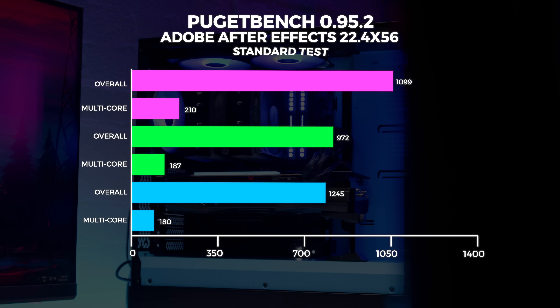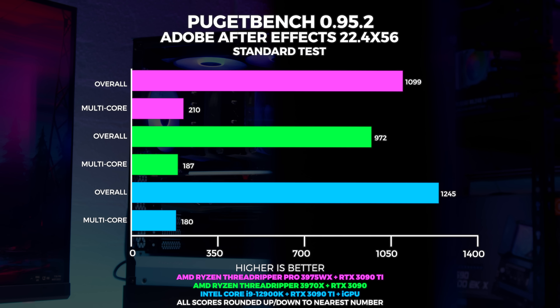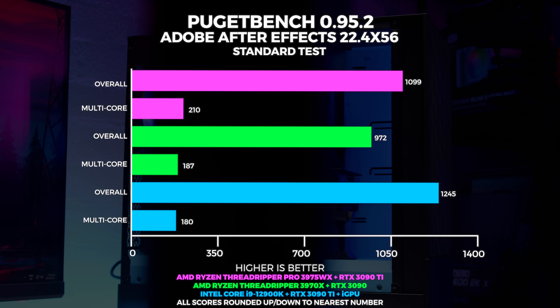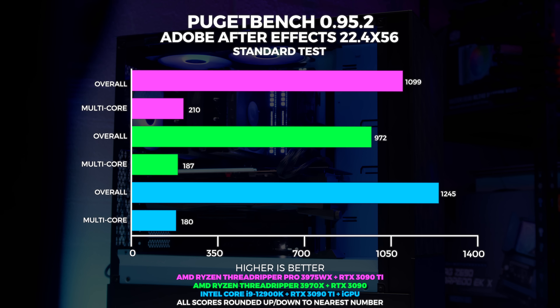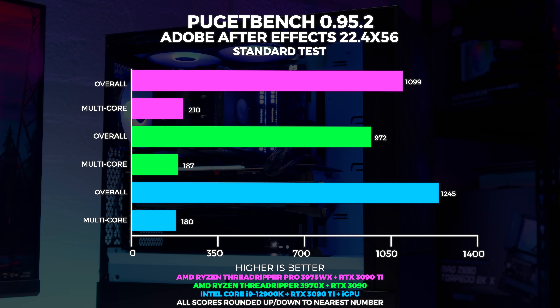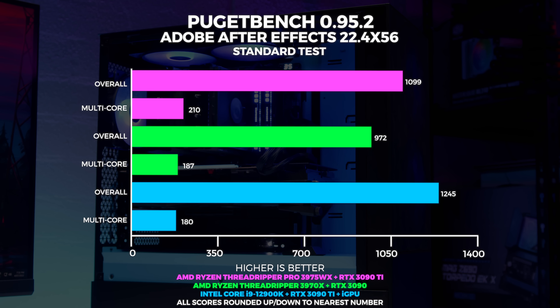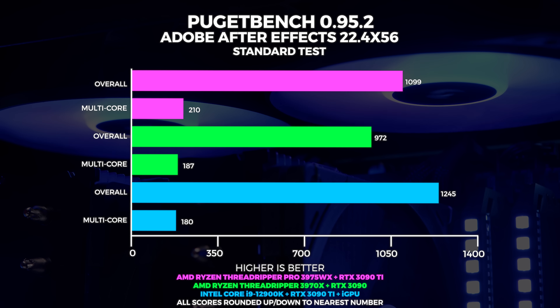Now let's take a look at After Effects. I've broken this down into two separate group metrics to better understand what all this data means — firstly, overall performance and multi-core performance. This actually shows quite a bit of disparity with After Effects as a piece of software. If we look at the Threadripper Pro results, the overall performance is lower than the 12900K system, however the multi-core performance is measurably higher.